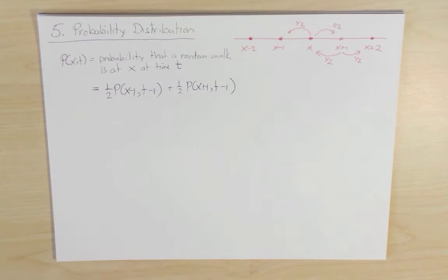So this object is called the master equation, and it describes how the probability distribution evolves in time.